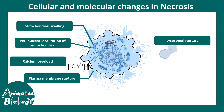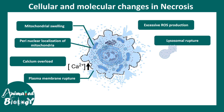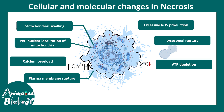Lysosomal rupture leads to release of several lysosomal enzymes which degrade proteins and affect other organelles inside the cytoplasm. Excessive ROS production is a feature of necrosis. Since the mitochondria is dysfunctional and swelled up, ATP depletion is very common. When ATP levels go down, many enzymes that require ATP cannot function properly, and the overall activity of the cell and many enzymes are compromised in necrosis.